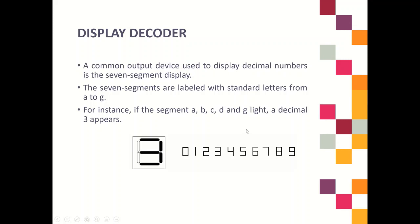The labeling starts from A. So this is A, this is B, C, D, E, F, and G. This is how you label your 7-segment display.